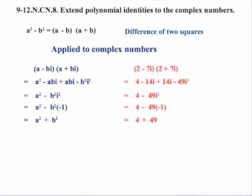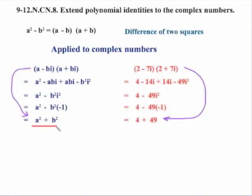Let's look at an example. We already saw that a minus bi times a plus bi gives a squared plus b squared. So if we take 2 minus 7i times 2 plus 7i and do all the work, we end up with 4 plus 49, which gives us 53. But applying the shortcut directly — a squared plus b squared — we could have just taken 2 squared equals 4 and 7 squared equals 49, and gone straight to 53.